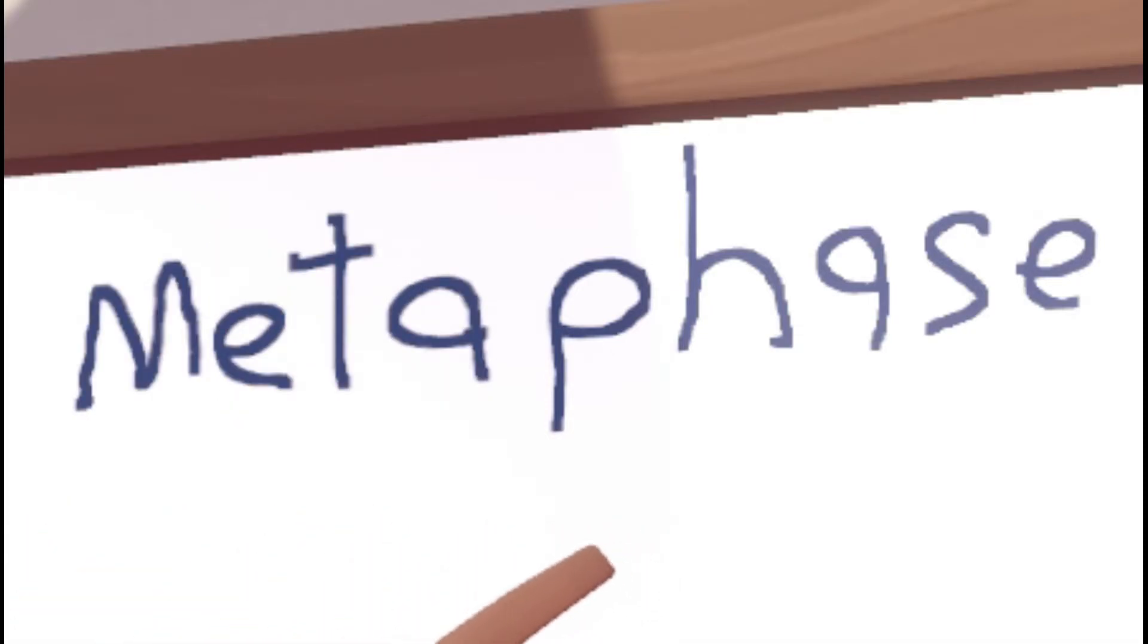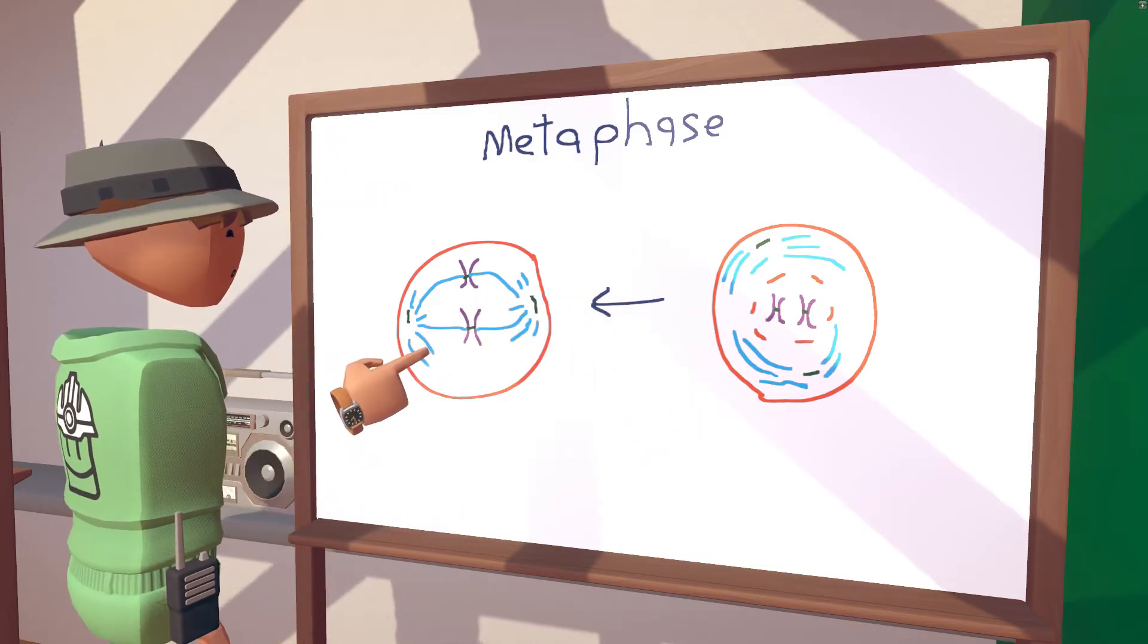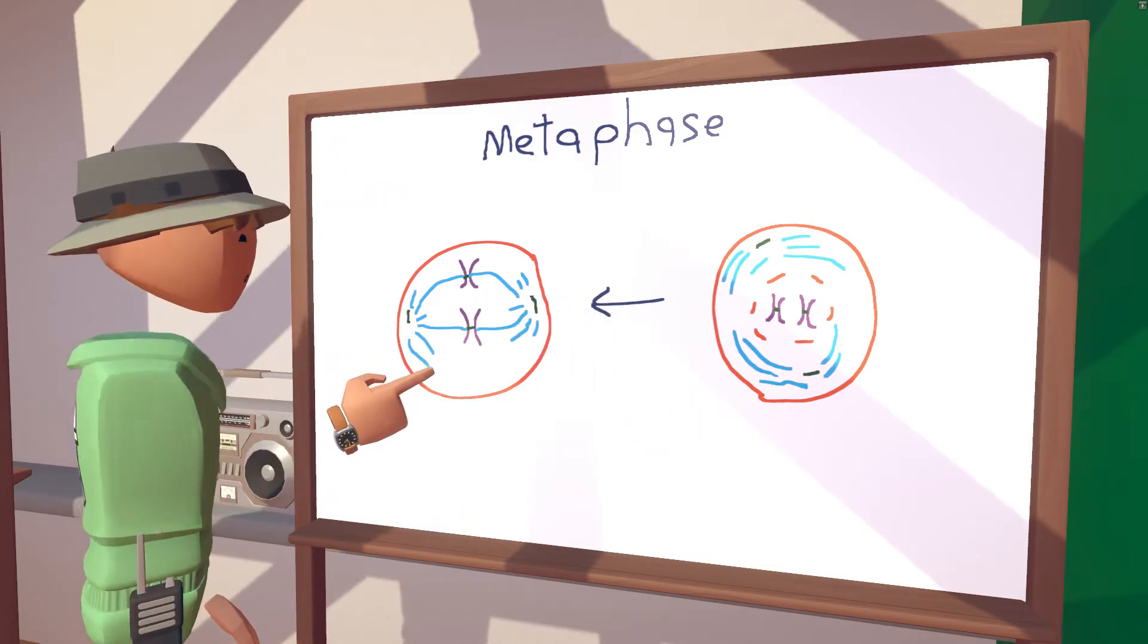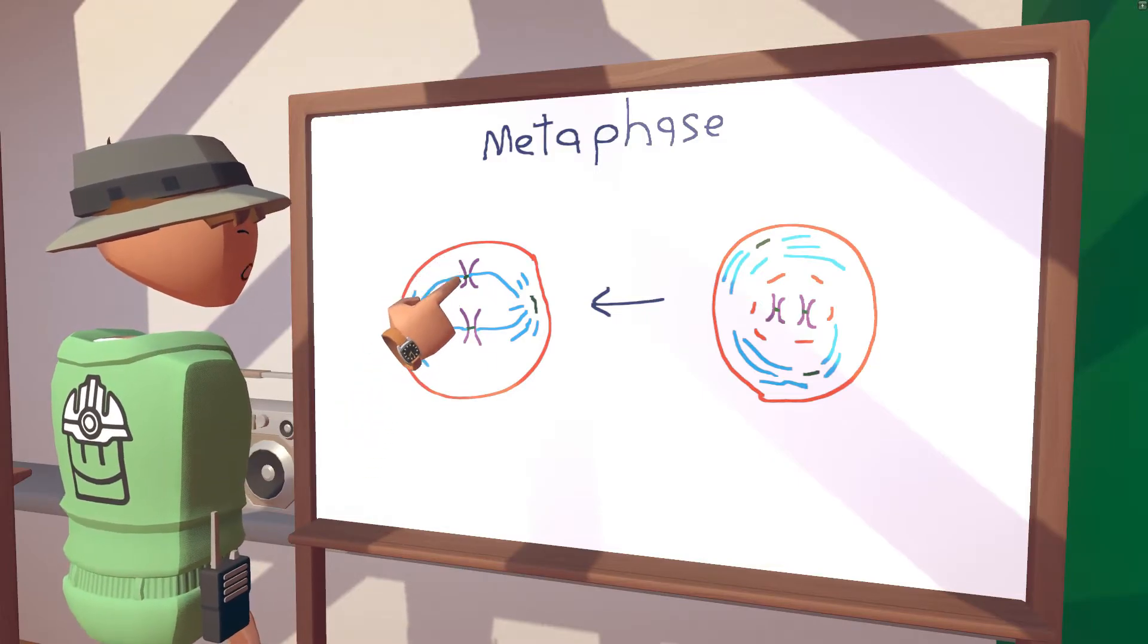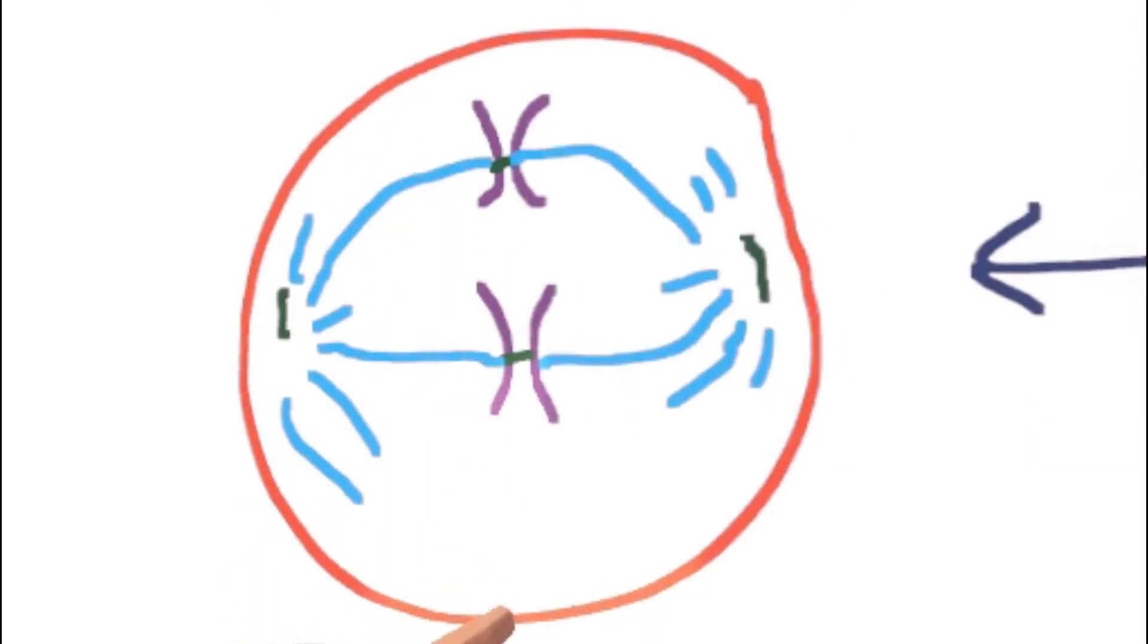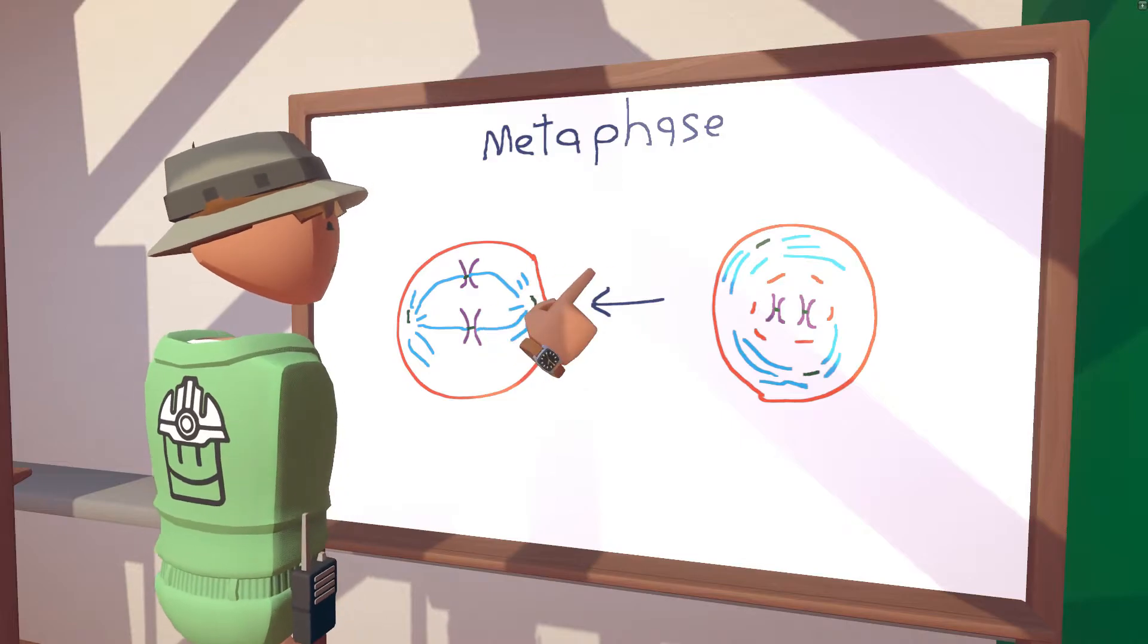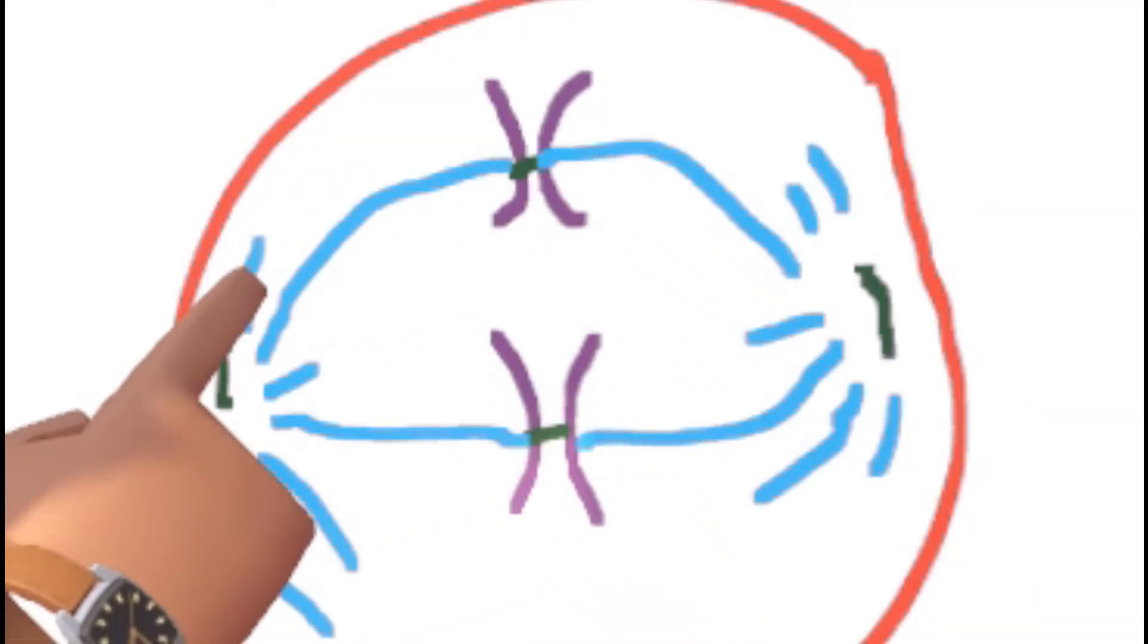So in the next phase of mitosis, metaphase, we can see a cell before and after metaphase. One of the main things that happens is the chromosomes revealed at the end of prophase line up in the center of the cell. And those spindle fibers from prophase attach to each end of the centromere.